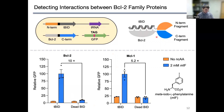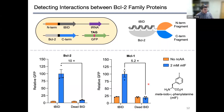To measure the generality of our system, we also asked if we could detect the interaction between a second BCL2 family member, MCL1, which also binds tBID. Again, GFP signal relied on addition of the unnatural amino acid and was high in its presence, while with the DEADBID negative control, signal was not significantly greater than background. We've also used this system to detect other protein–protein interactions, including interactions between portions of the spike protein of SARS-CoV-2, demonstrating that this can be used as a general tool for detecting these types of interactions.